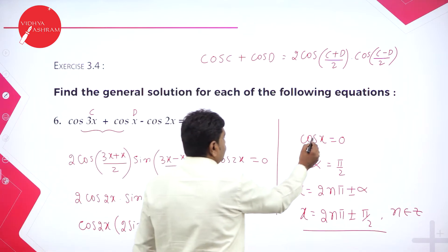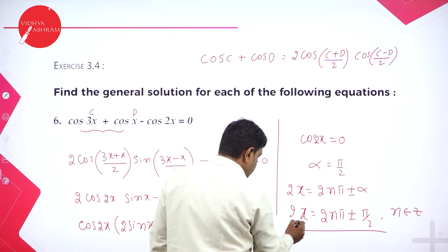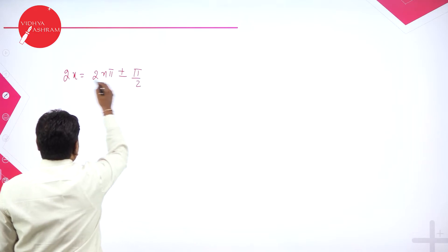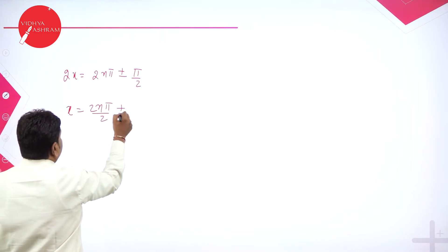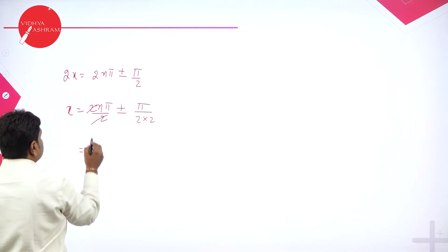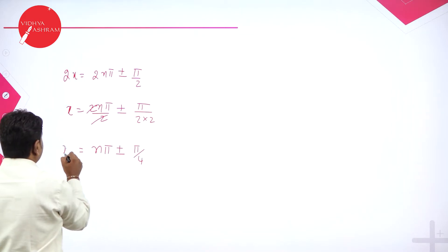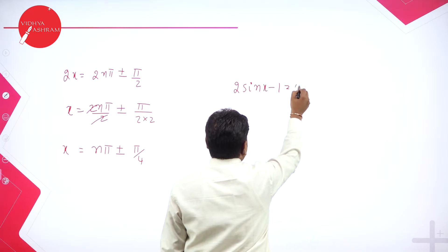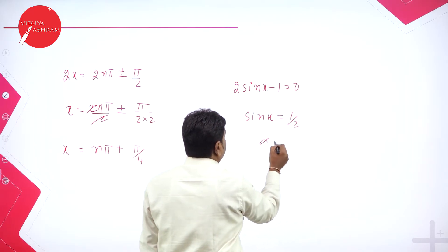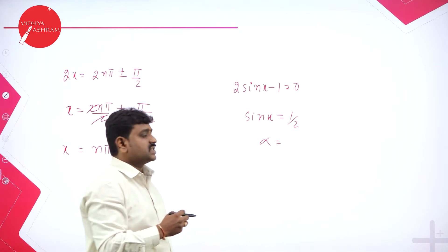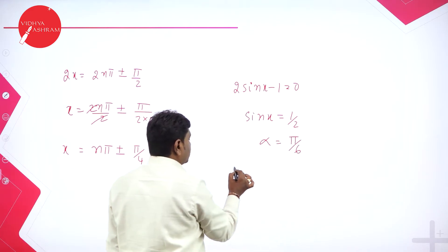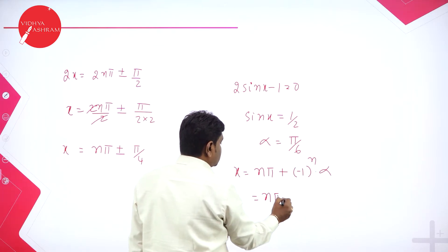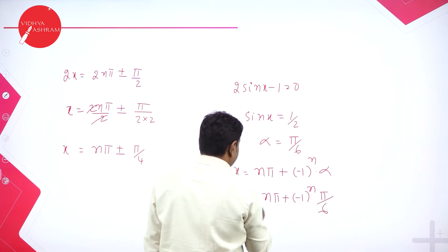For cos 2x equals 0: alpha in the cos table where you get 0 is at 90 degrees, so alpha is pi by 2. Since we have 2x, we write 2x equals 2n pi plus or minus pi by 2, then divide by 2 to get x equals n pi plus or minus pi by 4. For the second part, 2 sin x minus 1 equals 0 gives sin x equals 1 by 2. Sin 30 degrees is 1 by 2, so alpha is pi by 6. The general solution is x equals n pi plus (minus 1)^n into pi by 6.